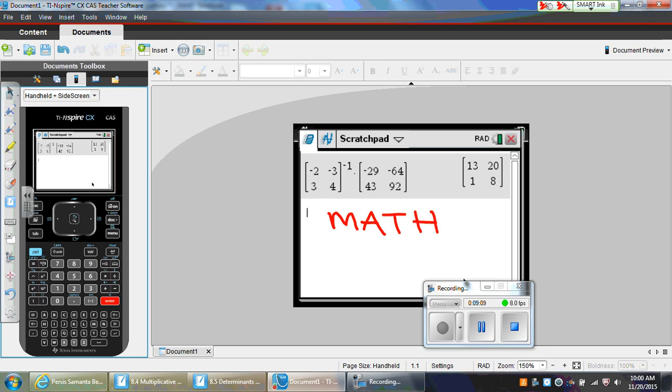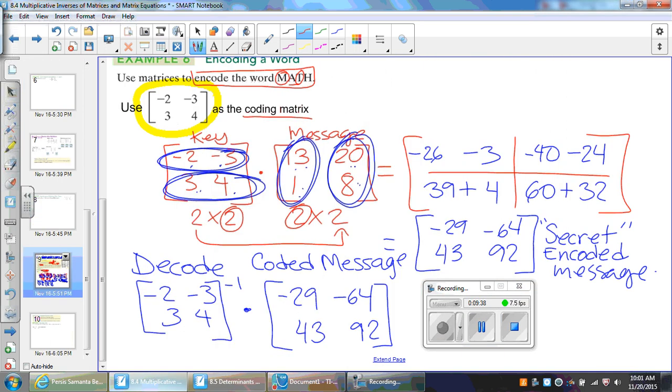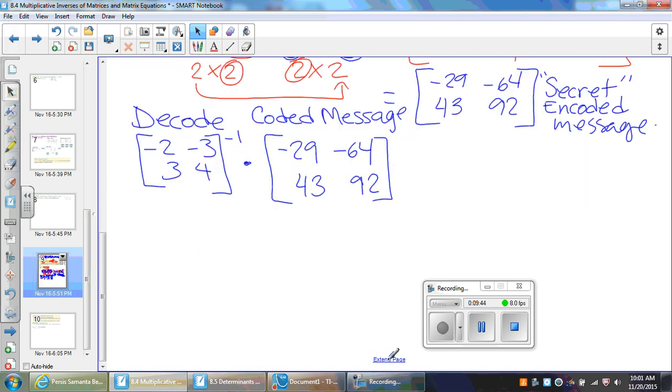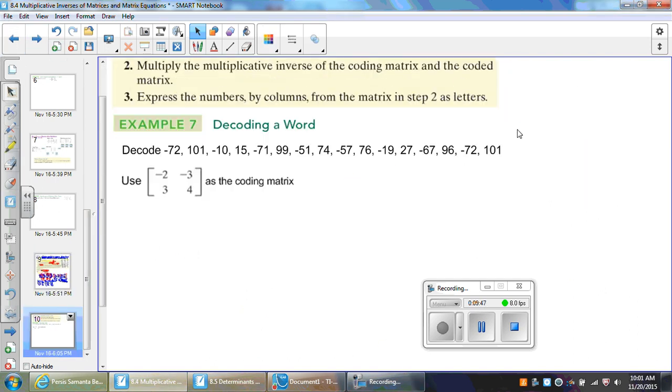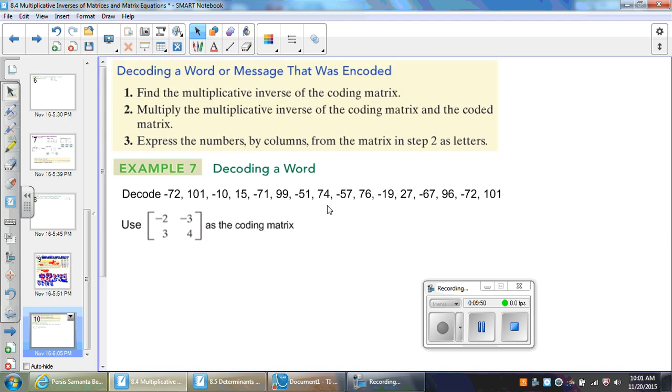So, that was the coding and decoding of the message. To code, you multiply by a square matrix. To decode, you multiply the encoded message by the inverse. It is important that you keep the key or the coding matrix on the left side, because remember, the matrix multiplication is not commutative. What I want you guys to do now, let's move on to the next example. Here, I made a message of my own. I already showed you how to decode, right?